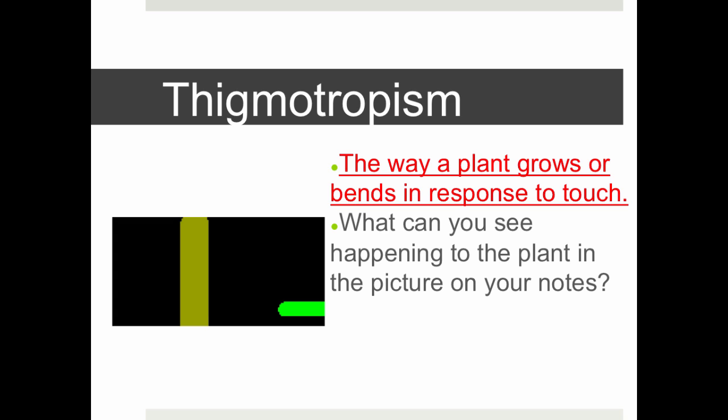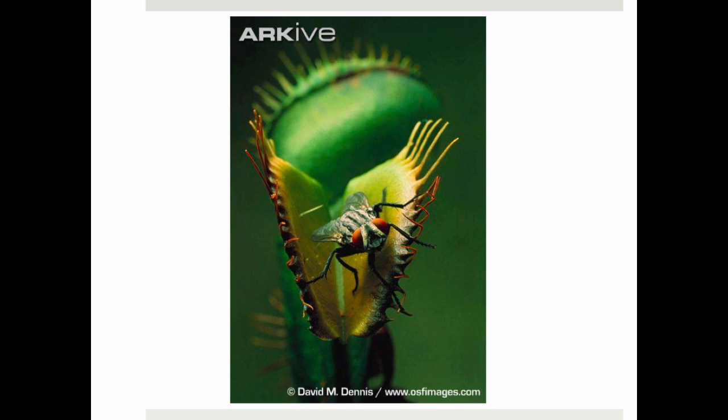Thigmotropism is the way a plant grows or bends in response to touch. You can see an example in the picture in your notes. If you touch a plant like a fern, it closes up — that is a response to a stimulus. Another example is the Venus flytrap, which we talked about in adaptations. Venus flytraps have developed tiny little hairs inside that when an animal triggers them, the plant's response is to close up.